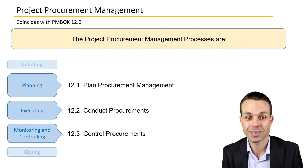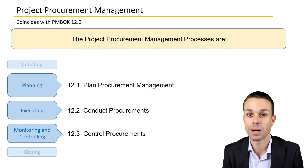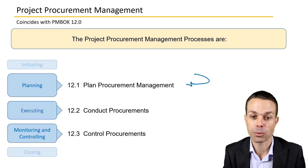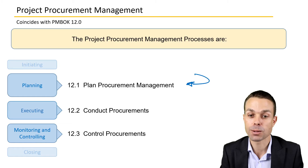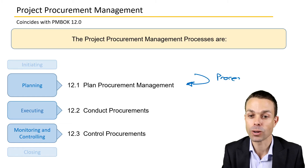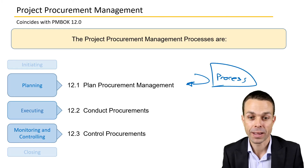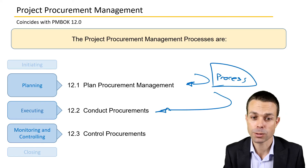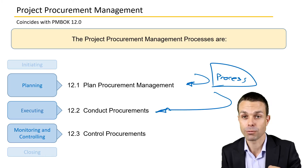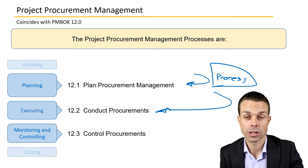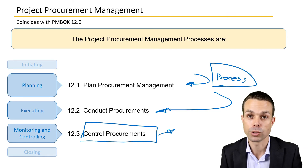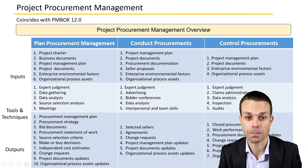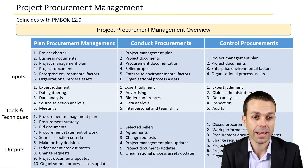There are three processes in the project procurement management knowledge area. First, we have planning our procurement management — as always, this is the process for how we are going to manage procurement overall. Then we need to conduct the procurements: which third parties are we going to choose? And once they're doing the work, we need to make sure everything is on track, so we're controlling those procurements.